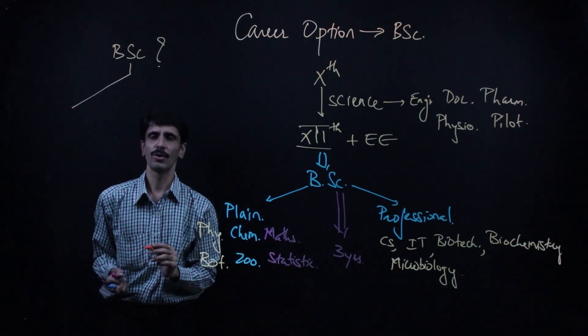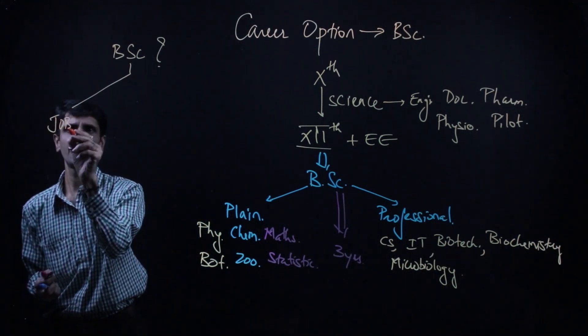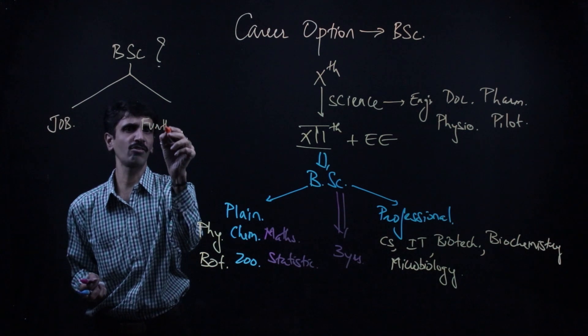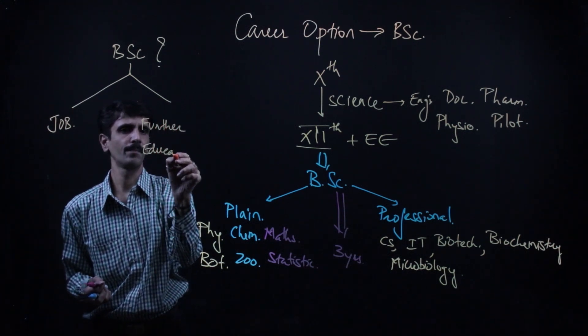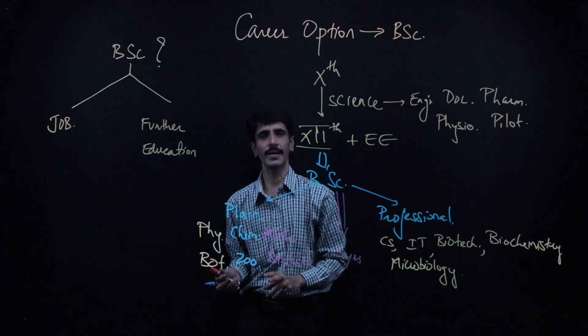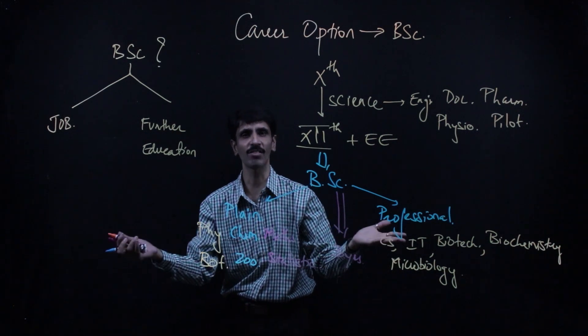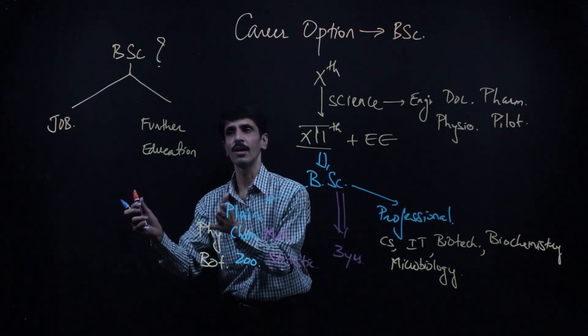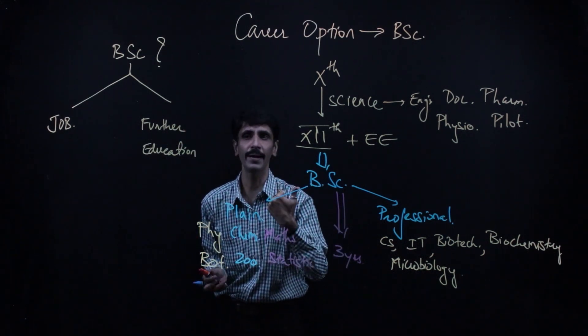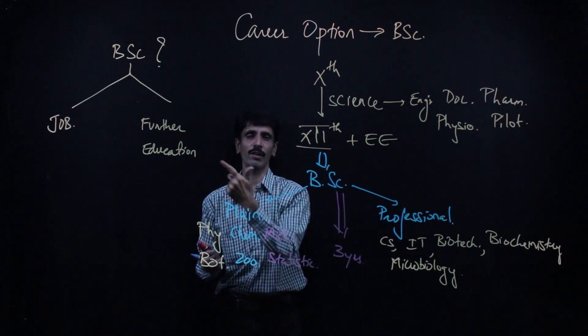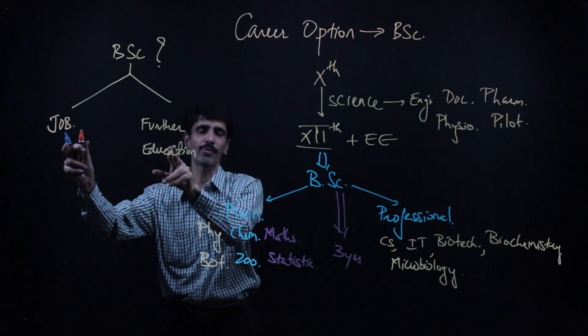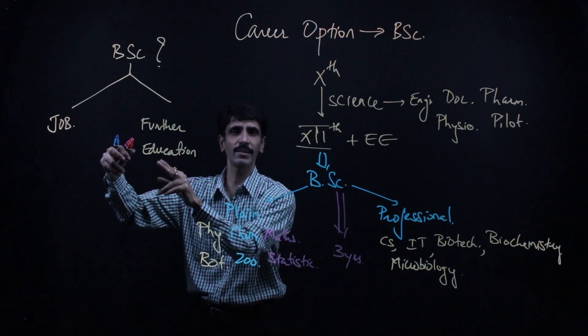The question is there: after three years of B.Sc., what next? So two major options - first, you're going to a job, and the second option is further education. These are the two major options. I'm talking about majority of students who have two options: either job or further education.